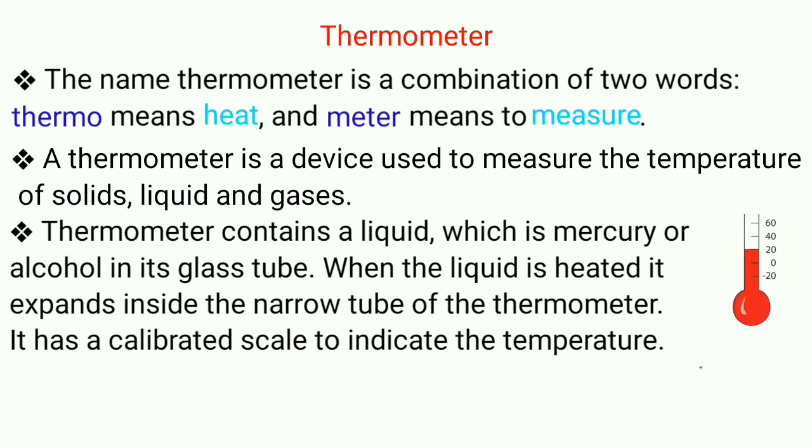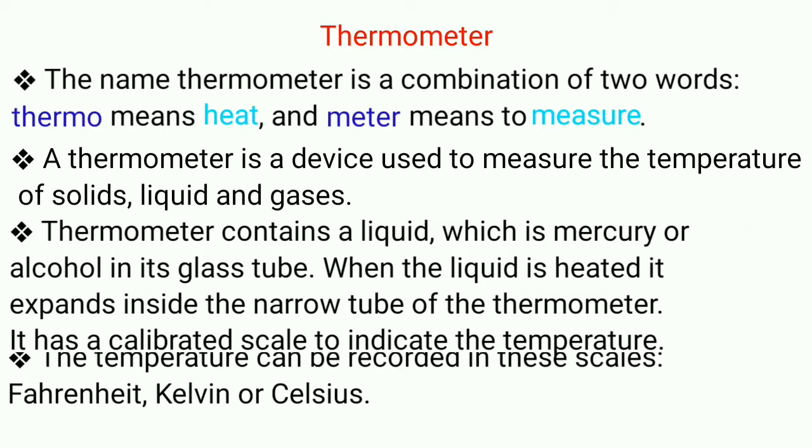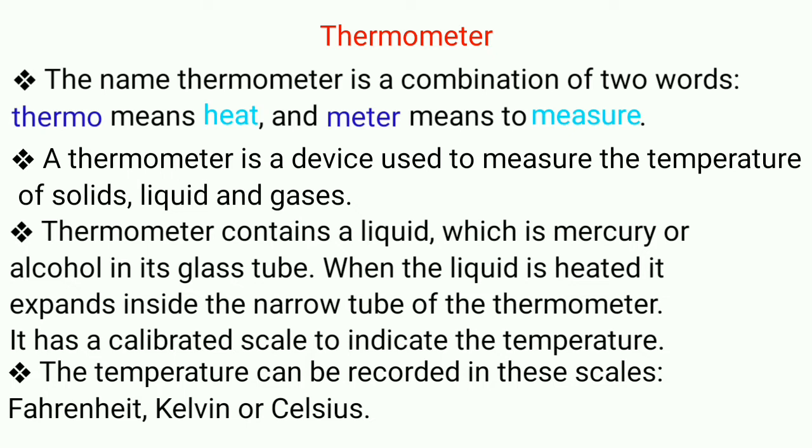A thermometer has a liquid inside its glass tube, either it is mercury or alcohol and when this liquid is heated, it expands inside the thermometer tube and it has a calibrated scale which is used to indicate that temperature. Temperature can be recorded in these scales as Fahrenheit, Celsius or Kelvin.